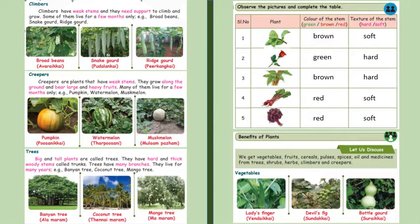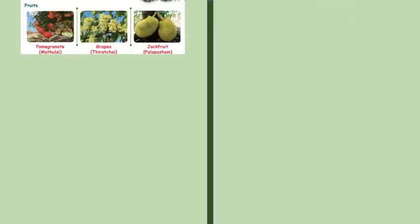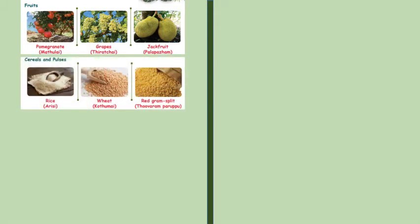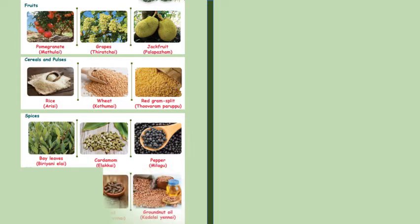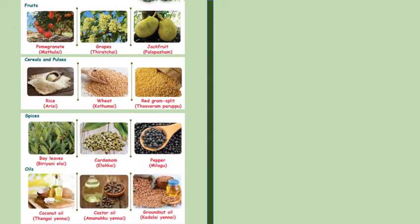Vegetables like lady's finger, devil's fig and bottle gourd. Fruits like pomegranates, grapes and jackfruit. Cereals and pulses like rice, wheat and bread gram splits. Spices like bay leaves, cardamom and pepper. Oil like coconut oil, castor oil and groundnut oil.